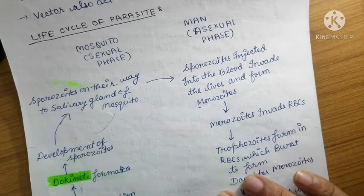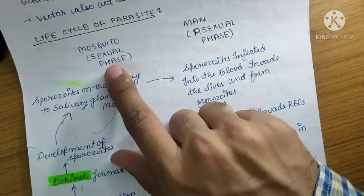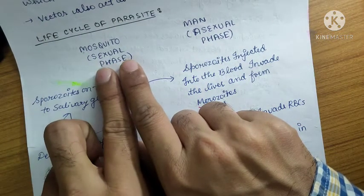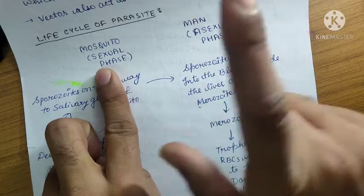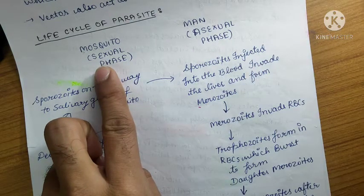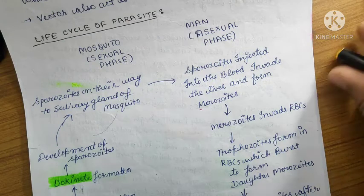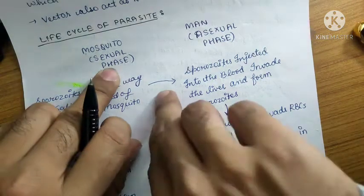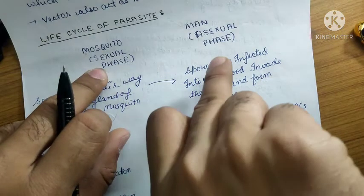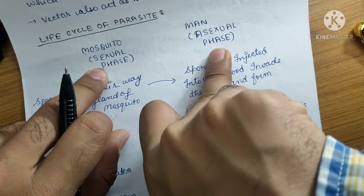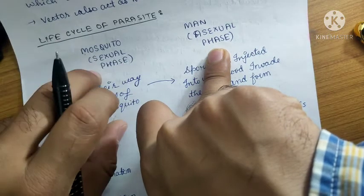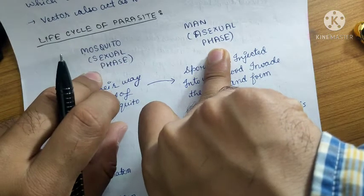There are two phases in the life cycle of the malarial parasite. One is the sexual phase and the other is the asexual phase. The sexual phase occurs in the mosquito and the asexual phase occurs in man.